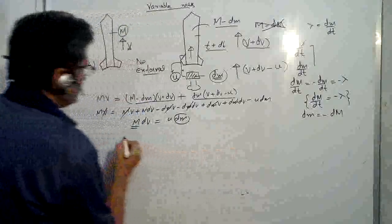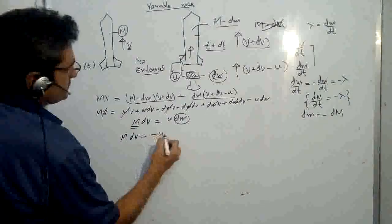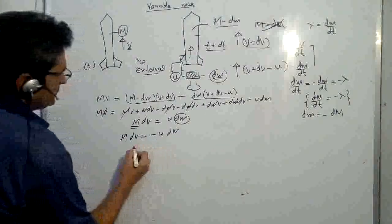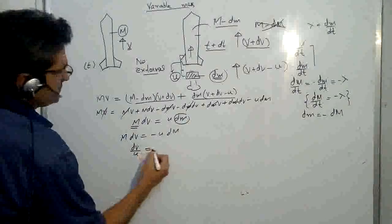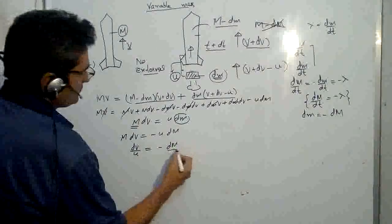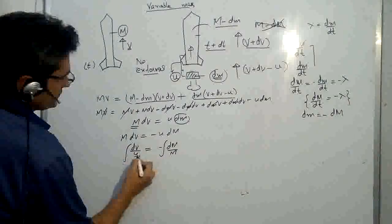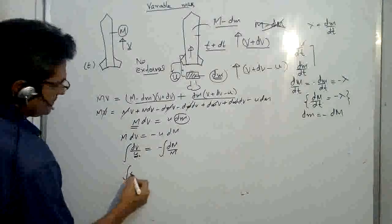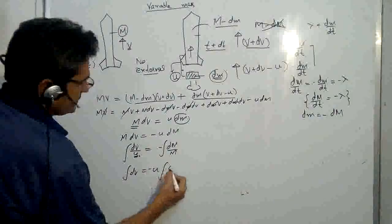So dm upon dt would be equal to minus lambda. So replace dm by this. Small dm is equal to minus capital dm. So we write here m dv is equal to minus dm. u is equal to minus dm upon m.